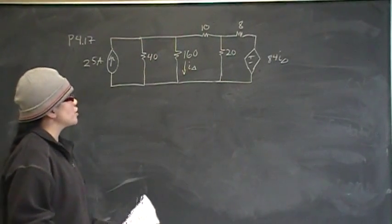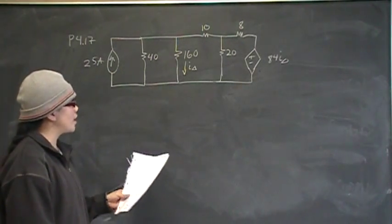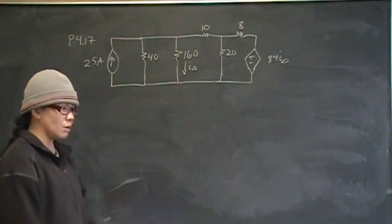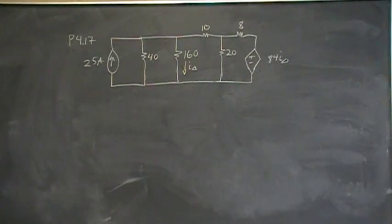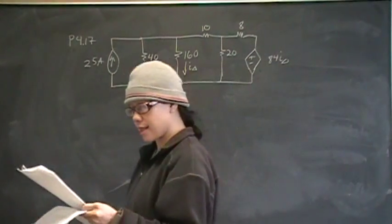So we're supposed to use a node voltage method to, what are we supposed to do?